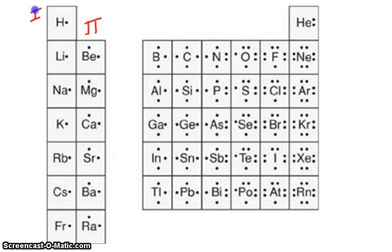We skip the transition metals, and group Roman numeral three, or modern times thirteen, has three. Group four, or group fourteen, has four.